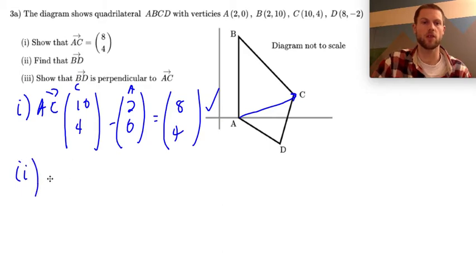Number two, let's find vector BD and vector BD is going to be the same process. I'm thinking about how I go from B to D, and so the point D is (8,-2), this is the position vector for D and let's subtract...